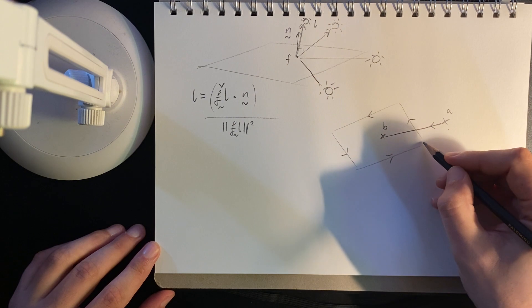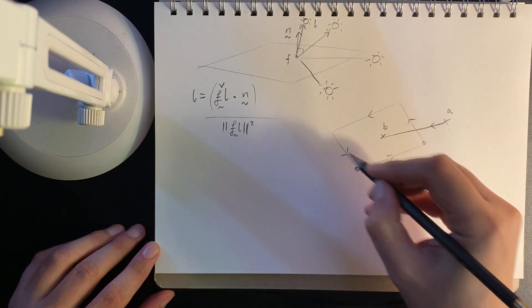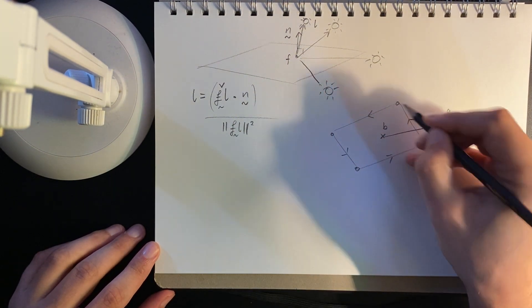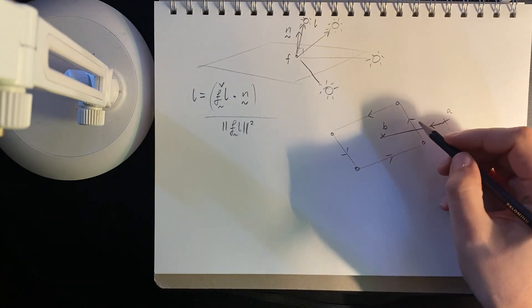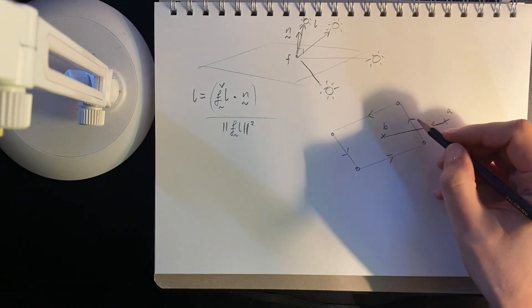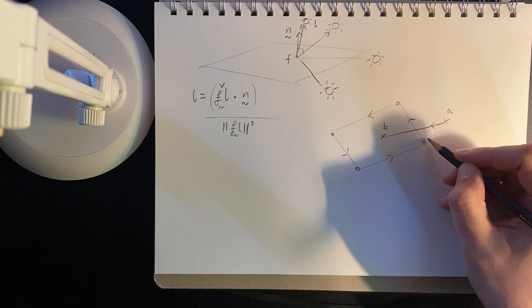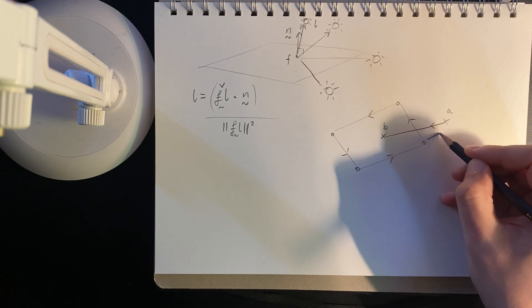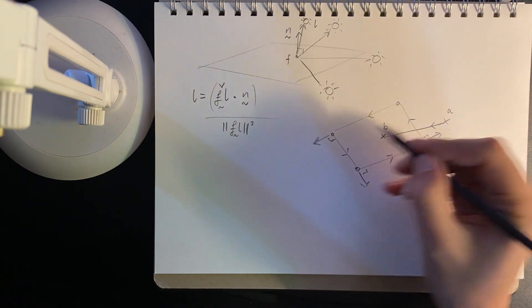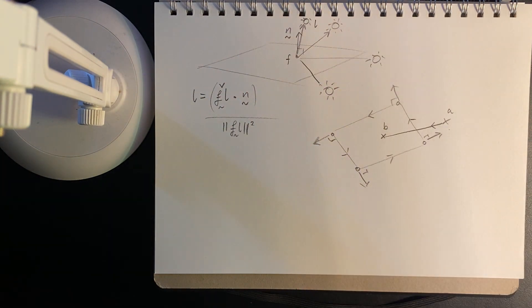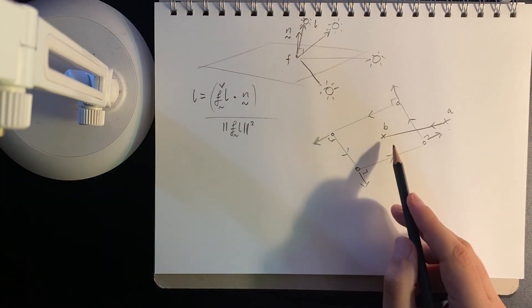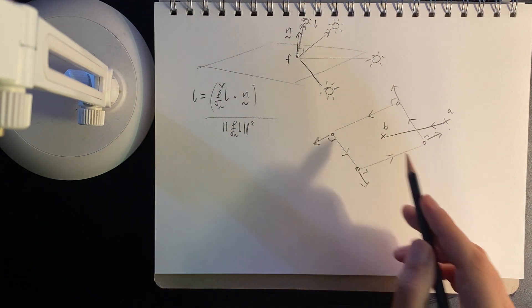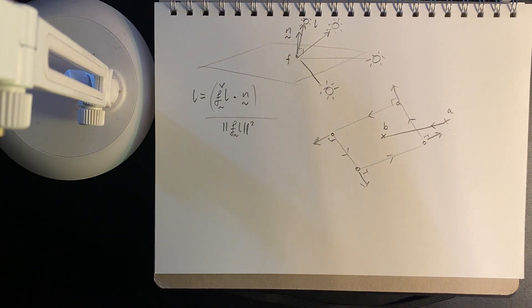And then each of these points will have an origin and a normal. So I guess let's define it like the normal is... Okay, so... Actually, let's not worry about A, B, let's just look at the point B. I'm kind of making this up on the spot.